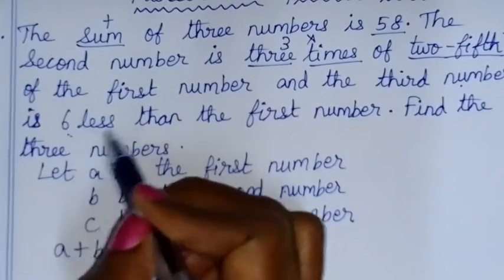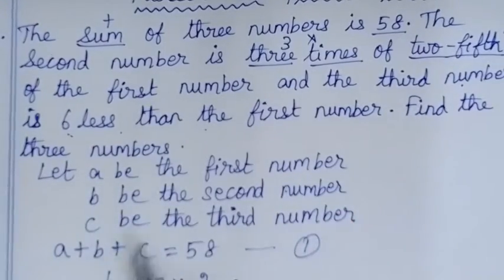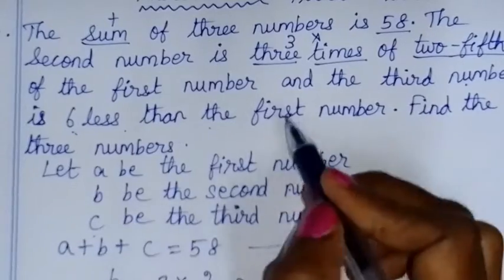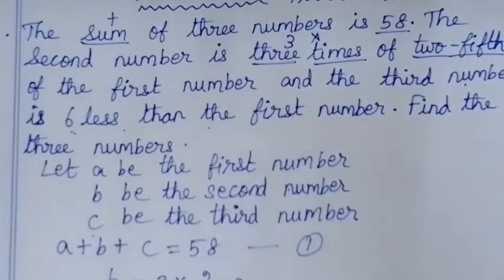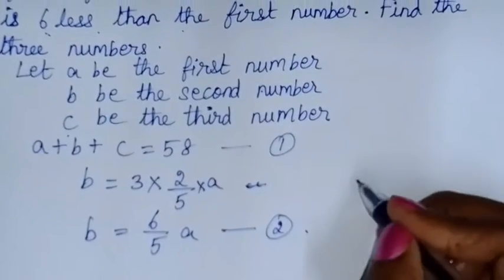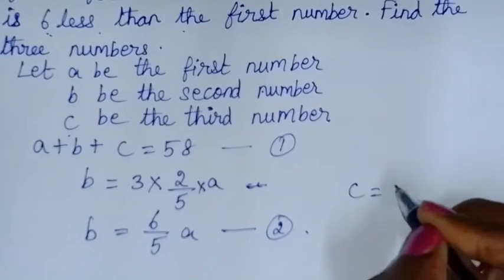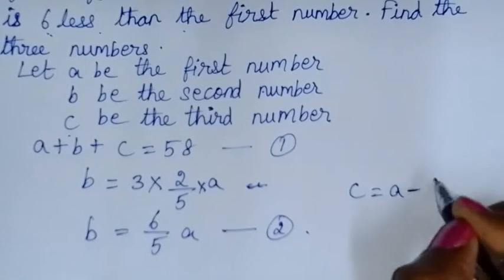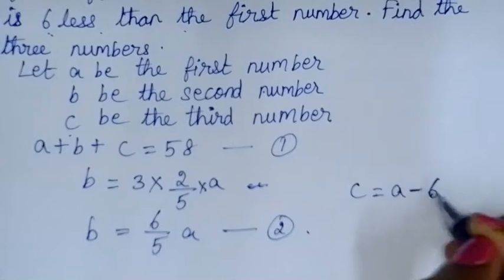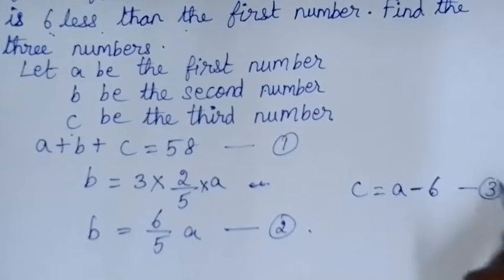The third number is 6 less than the first number. The third number is C, so C is equal to A minus 6. This is our third equation.